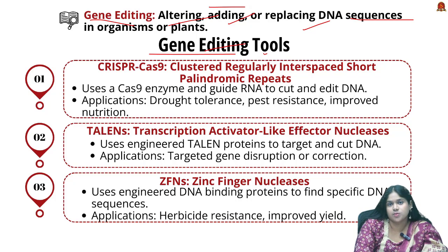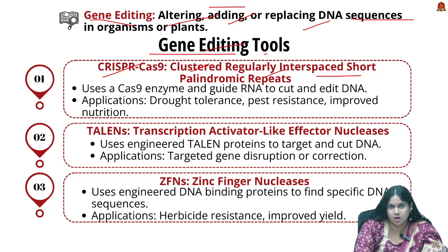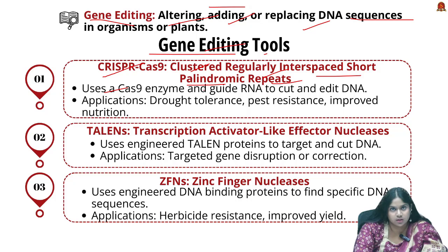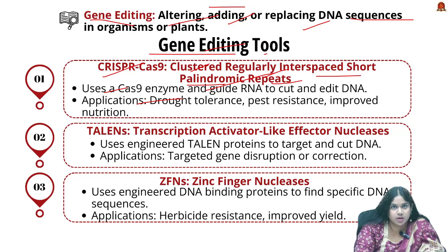The first tool is CRISPR-Cas9 — Clustered Regularly Interspaced Short Palindromic Repeats. This tool uses the Cas9 protein and enzyme, which works as scissors and works based on guide RNA direction. It is used to develop crops with traits like drought tolerance, pest resistance, and improved nutrition.